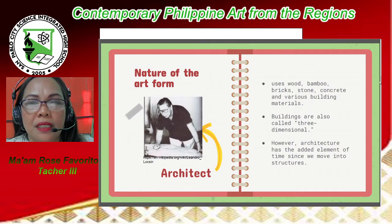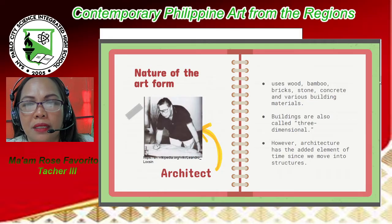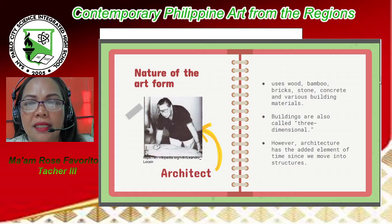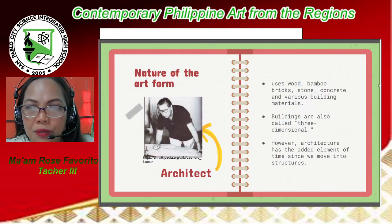Number two is architecture. An architect uses wood, bamboo, brick, stone, concrete, and various building materials. Buildings are also called three-dimensional. However, architecture has the added element of time since we move into structures.